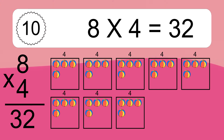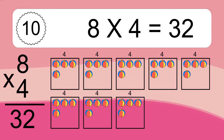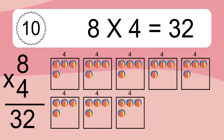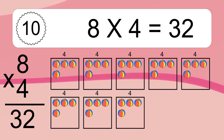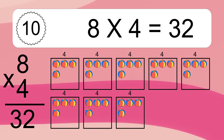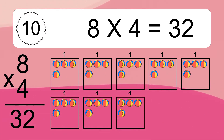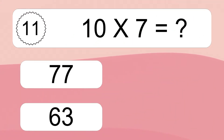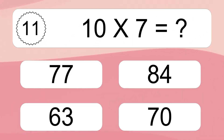Eight times four equals what? Eight times four equals thirty-two. We have eight boxes and each box has four colorful balls inside. If you count all the balls in all the boxes together, you will have eight times four balls. This equals thirty-two balls.